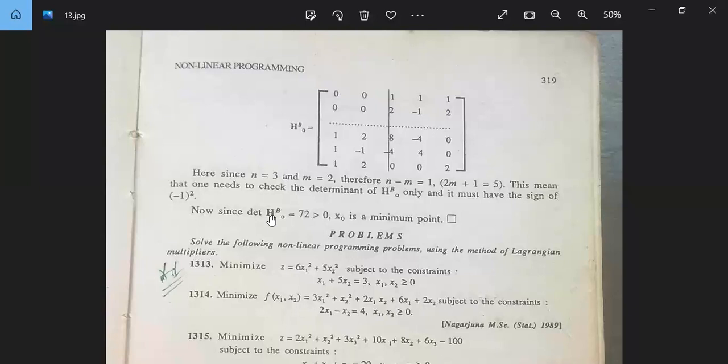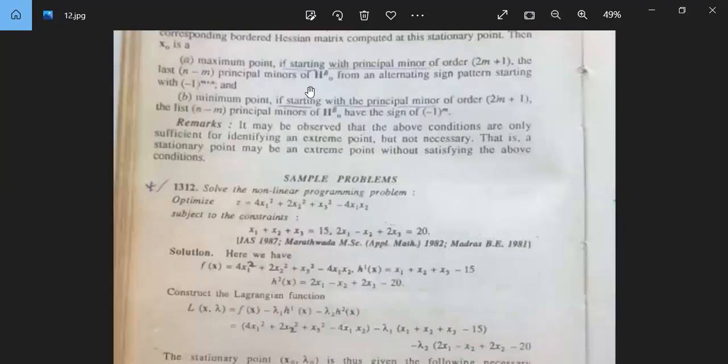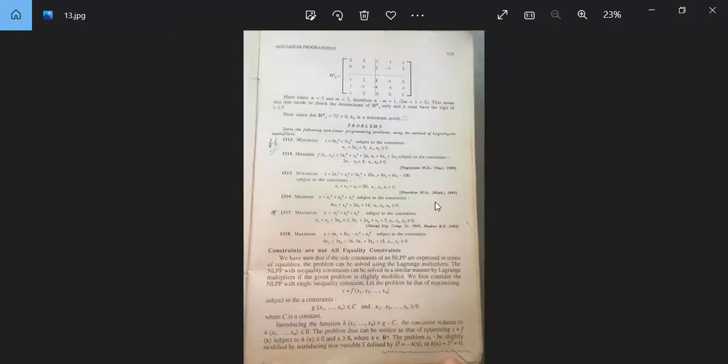And it must have the sign of minus 1 to the power m, minus 1 to the power 2. Now, since determinant H^b_0 is equal to 72, the determinant of H^b_0 equal to 72 is greater than 0. Therefore, x_0 is a minimum point. We have the sufficient condition to say that its sign is minus 1 to the power m, minus 1 to the power 2, so this will be a minimum point. So x_0 is our minimum point. In this way, this problem is solved.